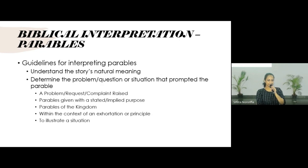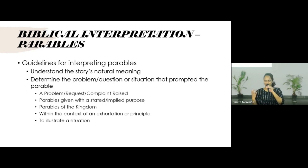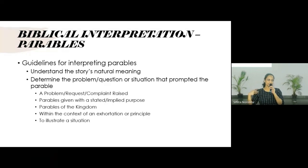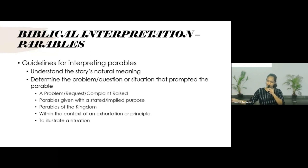So when we are interpreting a parable, these are some guidelines that we will use. One is: take the natural meaning of the story first. What does the story mean? The parable of the sower — a farmer throws seeds on the ground, it falls in different places, and based on where it falls, there are different results. That is the natural meaning of the story.